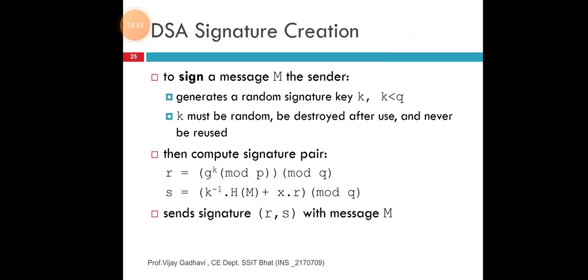DSA signature creation: how to create signatures. To sign a message M, the sender generates a random signature key K, with the condition K less than Q. K must be random and be destroyed after use, and never be reused. Then the computed signature is the pair using the equations: R equals (G^K mod P) mod Q, and S is the signature equation. It then sends signature (R, S) with message M. This is the step behind how to create DSA signatures.